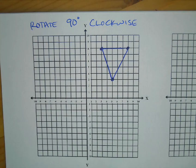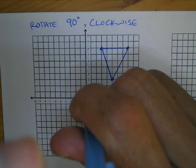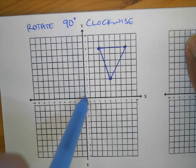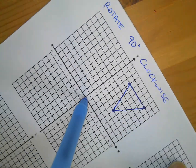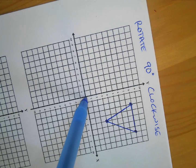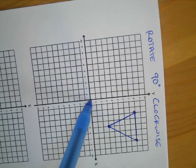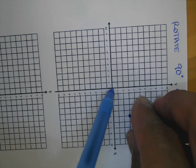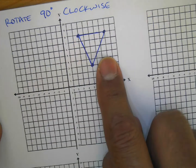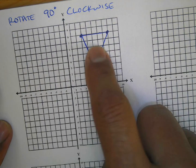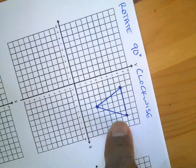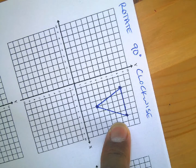So I've got the shape and I'm going to rotate it 90 degrees clockwise — that's to the right. Notice now it's down in quadrant four. When you started it was here in quadrant one, but since we're turning it clockwise 90 degrees it's going to end up down here facing this other way.